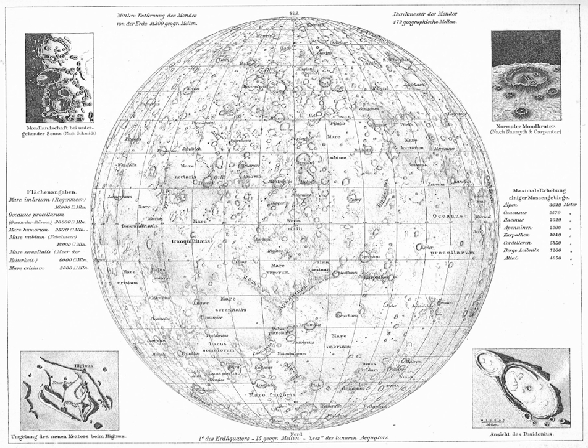All features on Phobos are named after scientists involved with the discovery, dynamics, or properties of the Martian satellites, or people and places from Jonathan Swift's Gulliver's Travels.